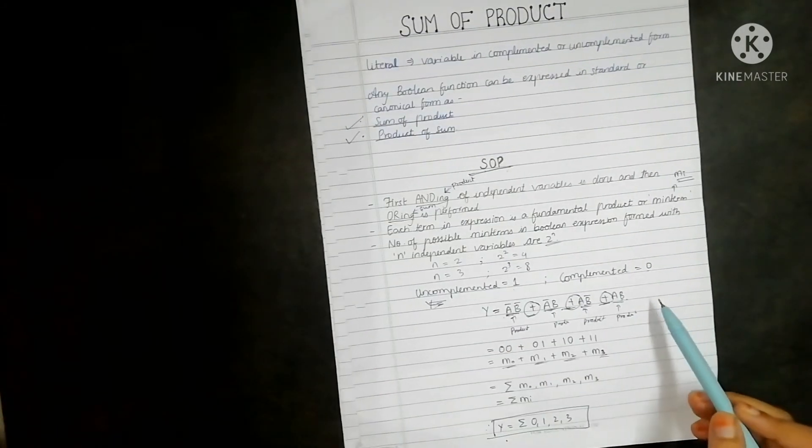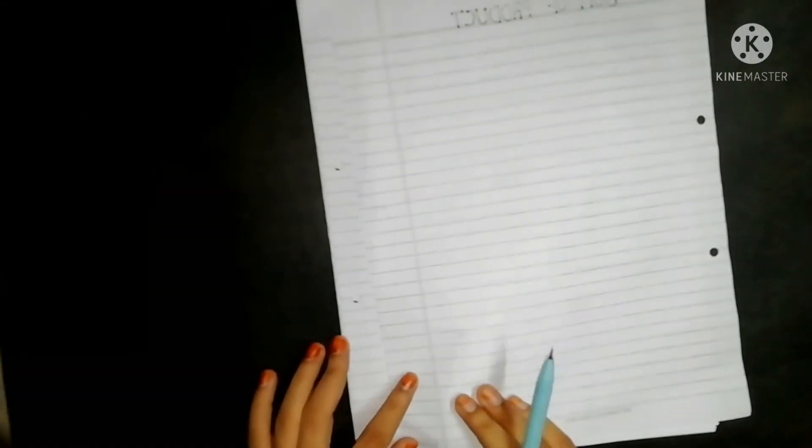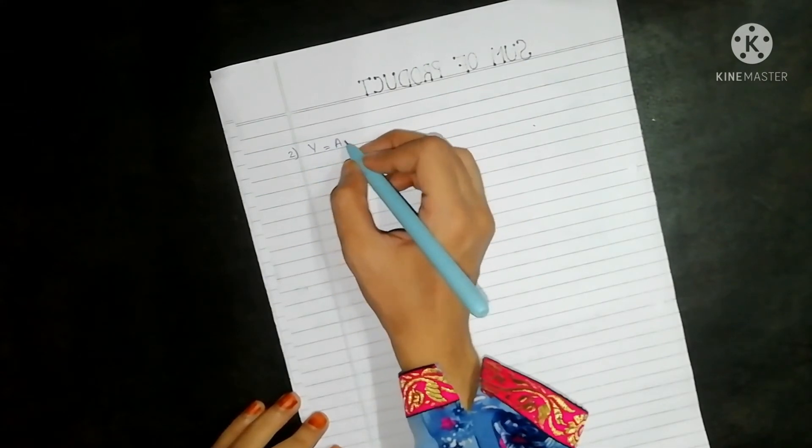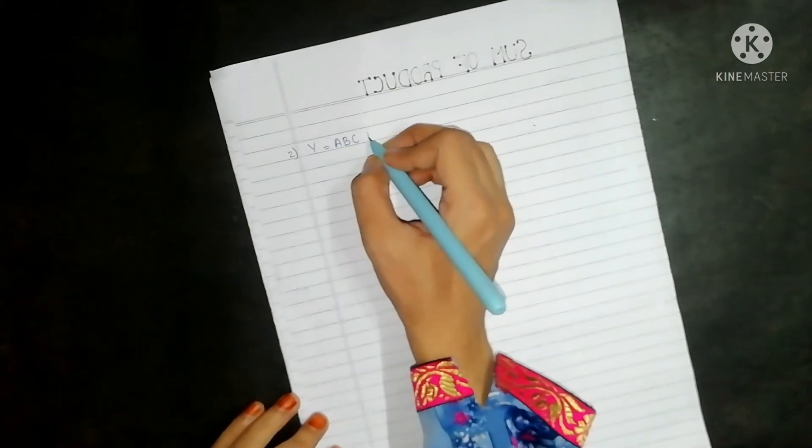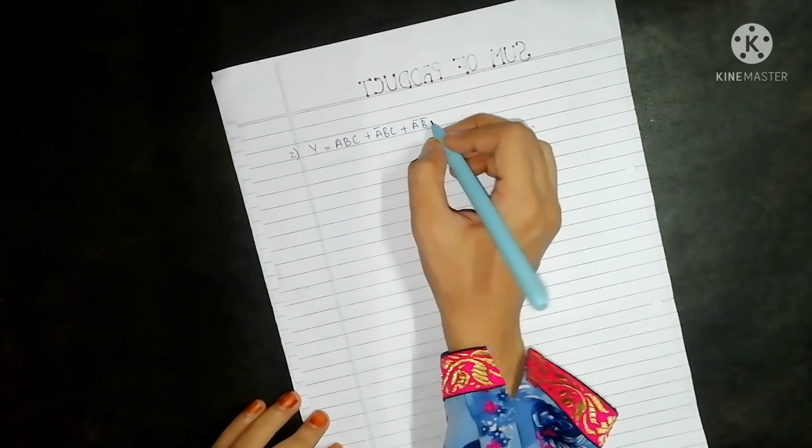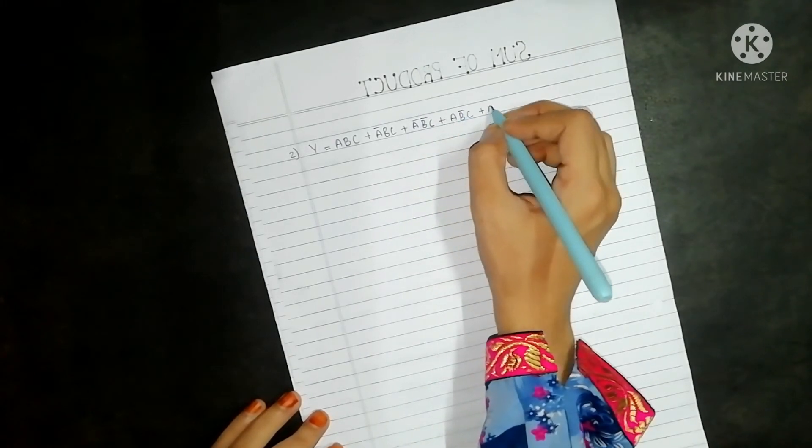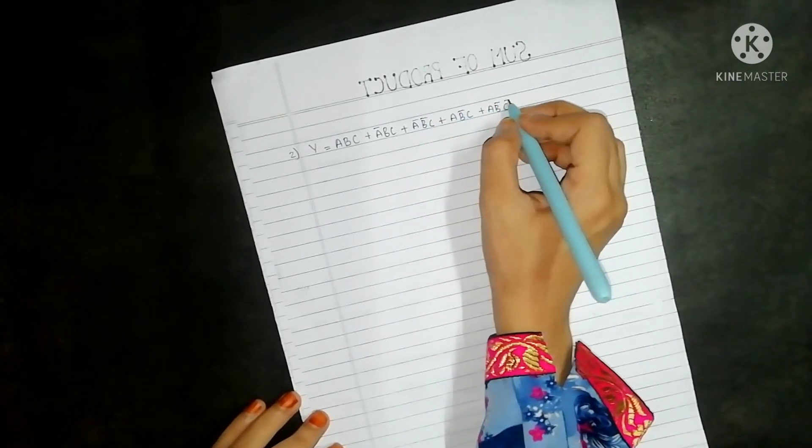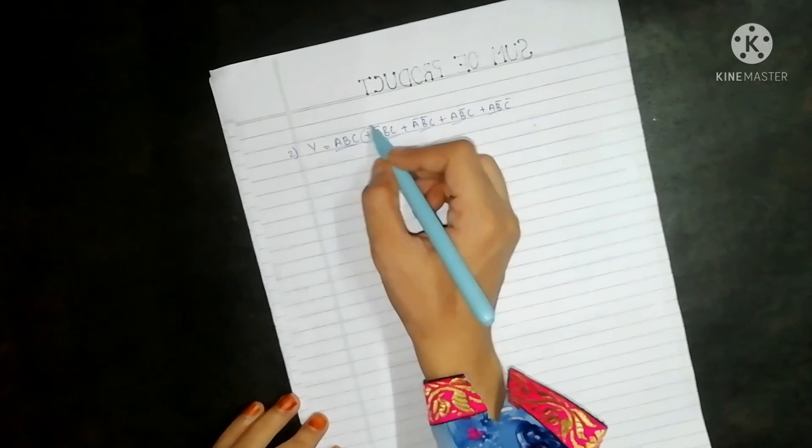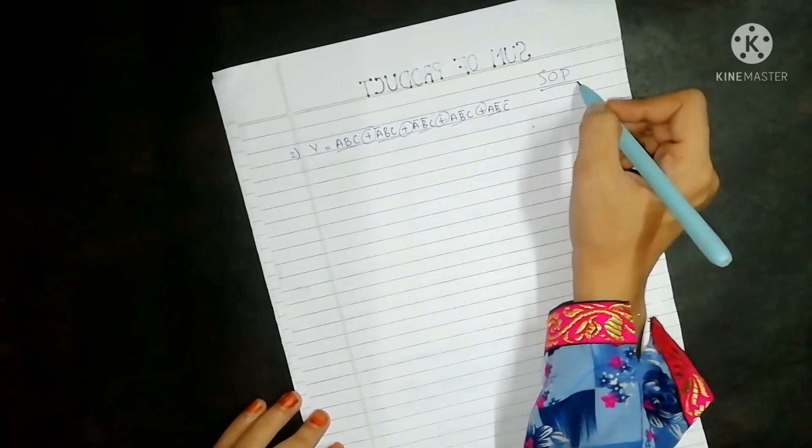In this way the sum of the product equation is solved. Now we will see one more example. We have an equation of three variables: y equals abc plus a bar bc plus a bar b bar c plus ab bar c. Again these are product, product, product and product, and we are taking sum of them, so it is of the form SOP, that is sum of products.